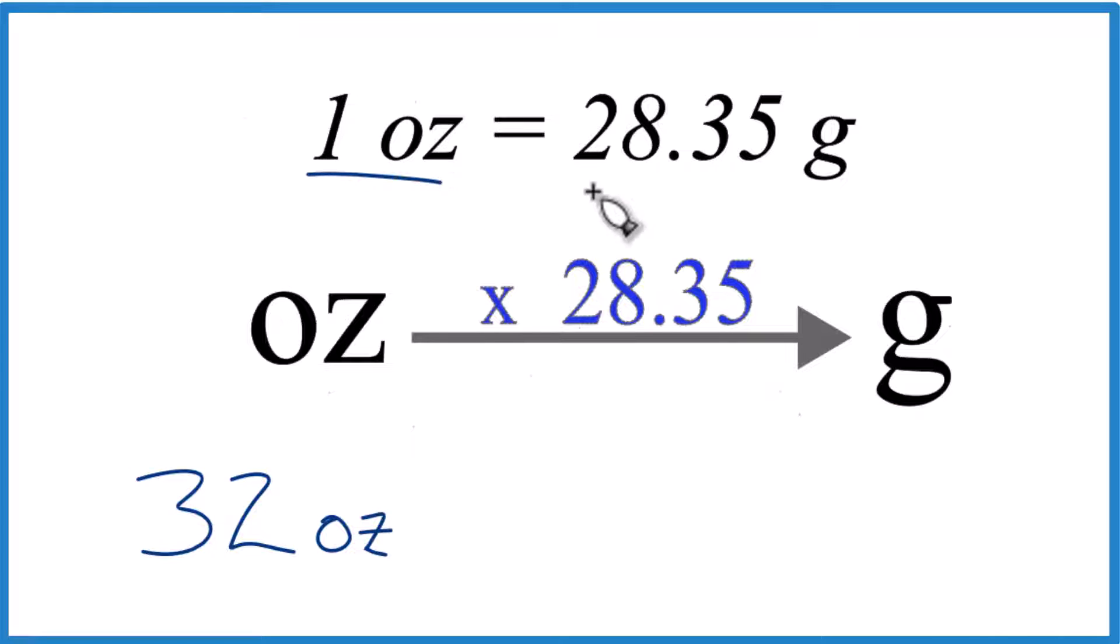One ounce, that's equal to 28.35 grams. We call that a conversion factor, and we need it when we're going from grams to ounces or ounces to grams.